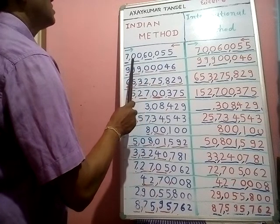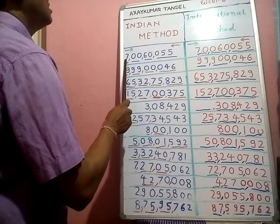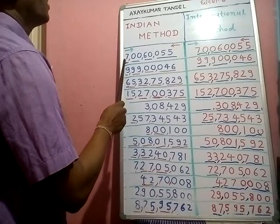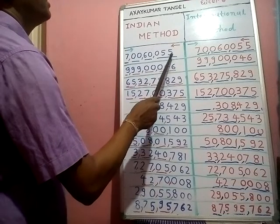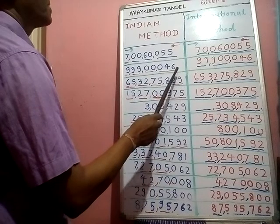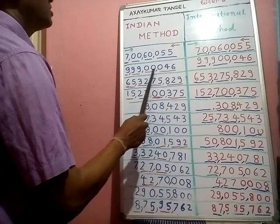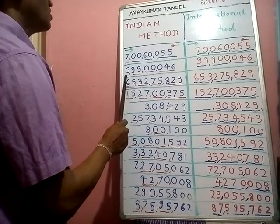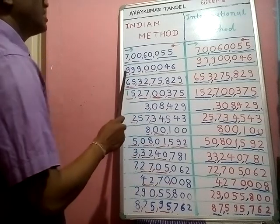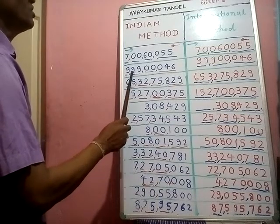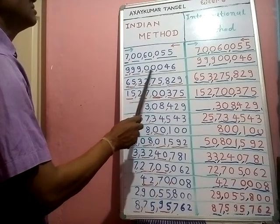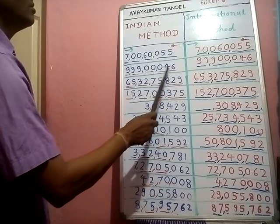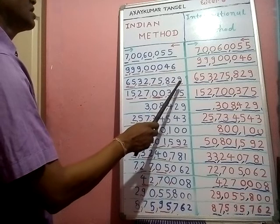First example — ones, tens, hundreds, thousands, ten thousands, lakhs, ten lakhs, crores. We read: seven crore forty-six lakh sixty thousand fifty-five. Next one — ones, tens, hundreds, thousands, ten thousands, lakhs, ten lakhs, crores. We read: nine crore ninety-nine lakh forty-six.